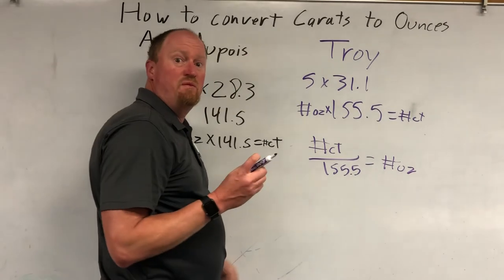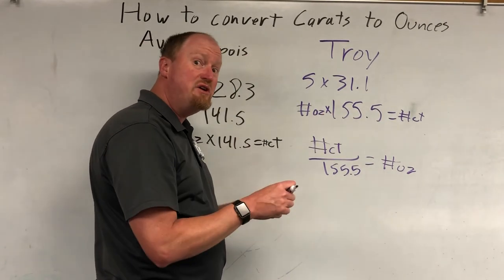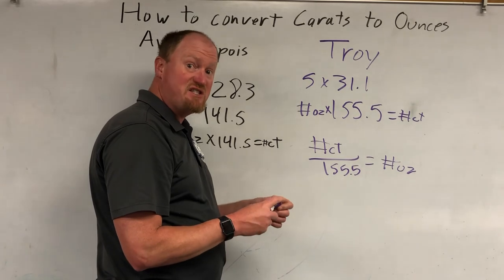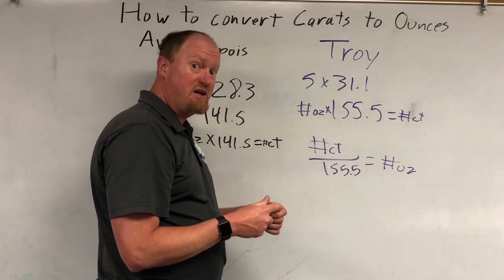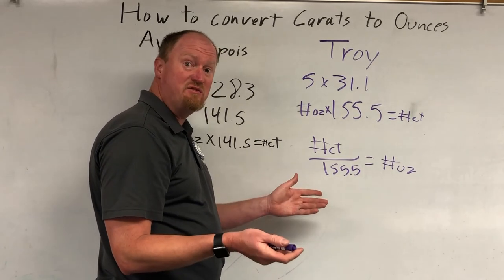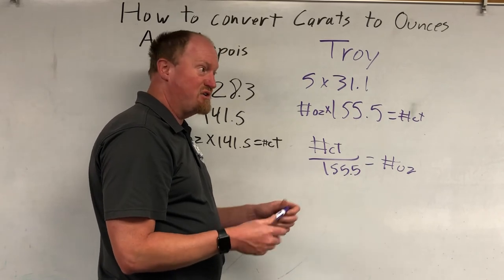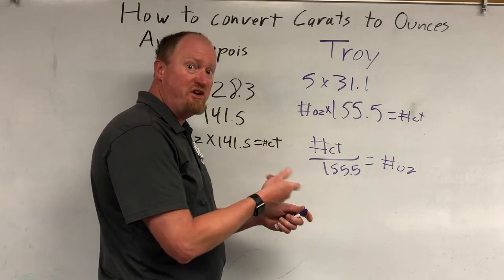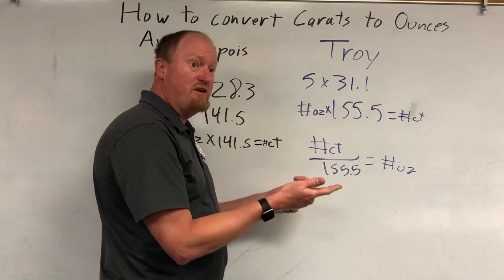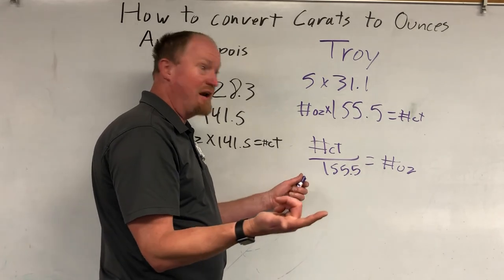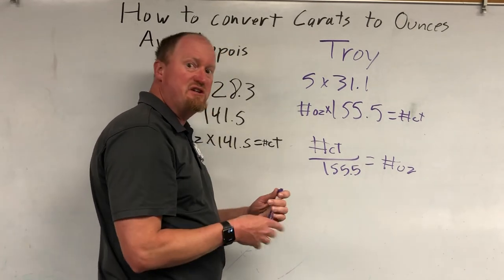Remember, if you're starting out with something small and converting to a big unit, you're gonna have less of them because they're bigger — you need less of them to make the same size. So if you are going from a small unit like a carat to ounces and you end up with a bigger number, you've done it backwards. Easy enough — just use common sense.